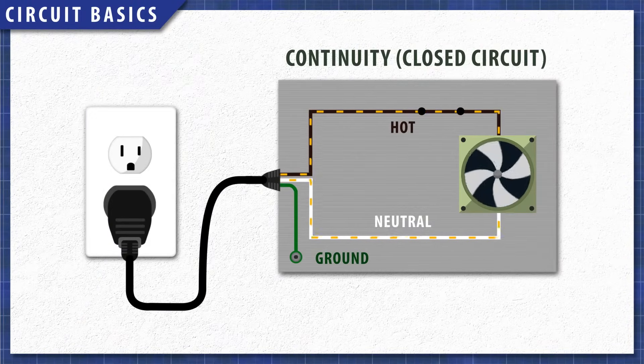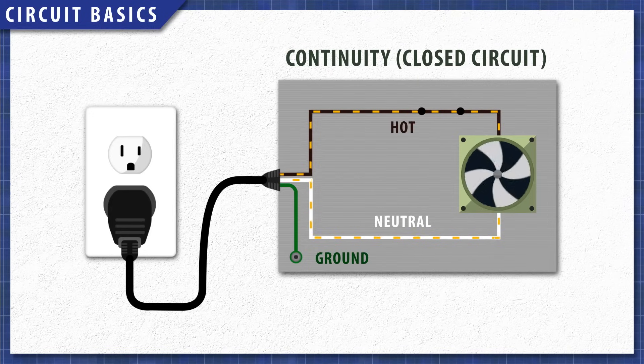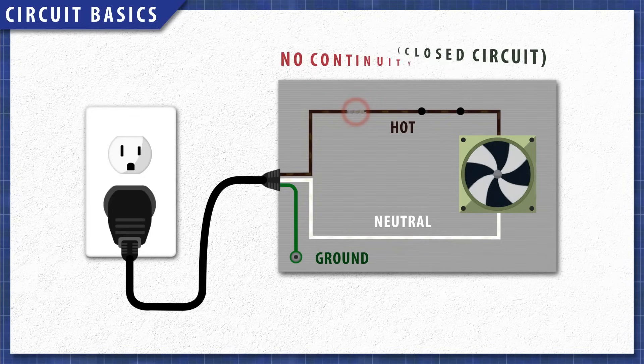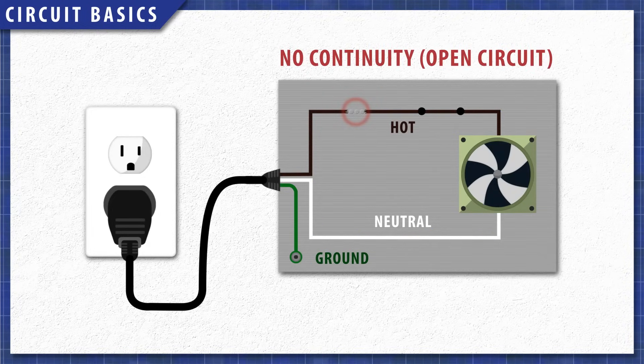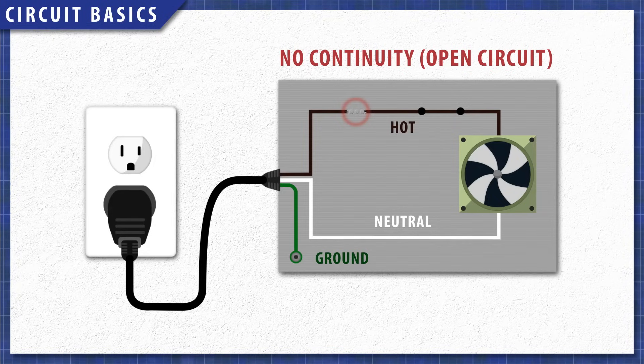All circuits need a continuous path to return to the source. This is continuity, or a closed circuit. If we disrupt this path with rubber, plastic, or by air in the case of a broken wire, then the current will not flow, as there is no continuity. This is an open circuit.